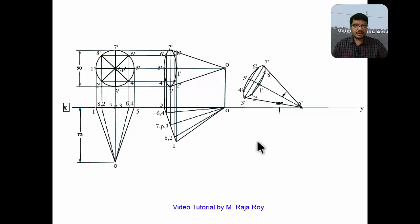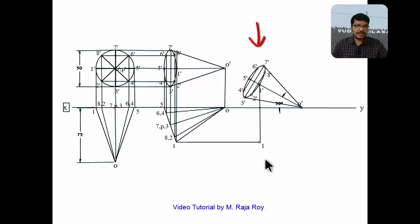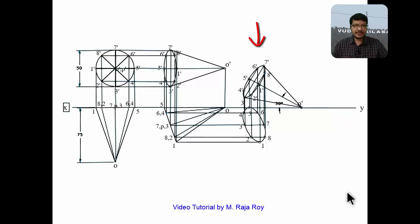Now obtain the top view by drawing locus lines from the second top view and projectors from the third-stage front view. The base is visible from this view direction, so first obtain the base points: 1, 2, 3, 4, 5, 6, 7, 8. Draw a smooth freehand curve, then draw tangents to represent the cone outline. The O point lies where locus of O and projector of O intersect — which is the same location as O dash. Draw tangents from O to the ellipse.